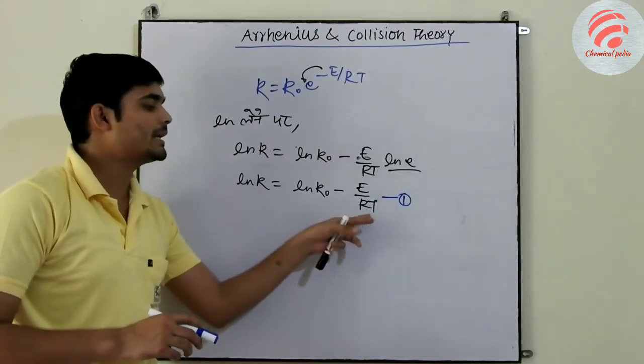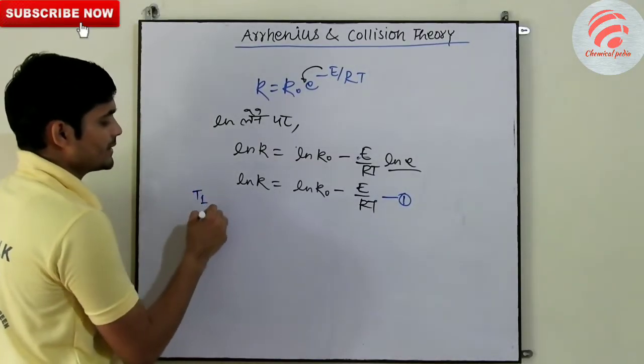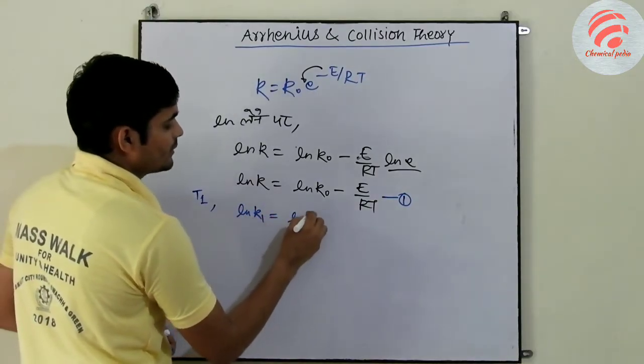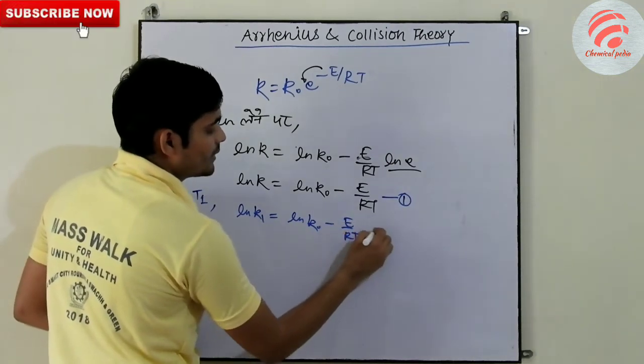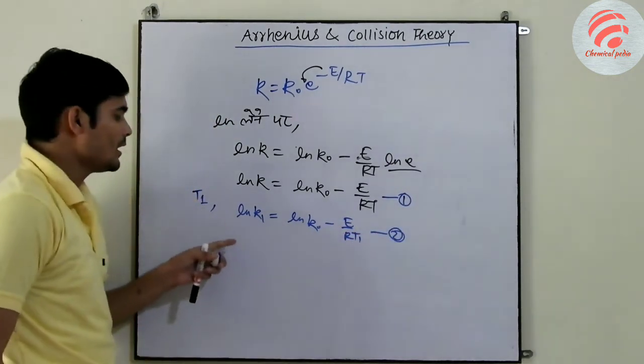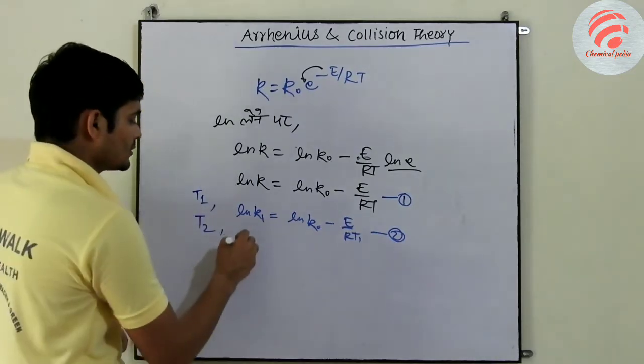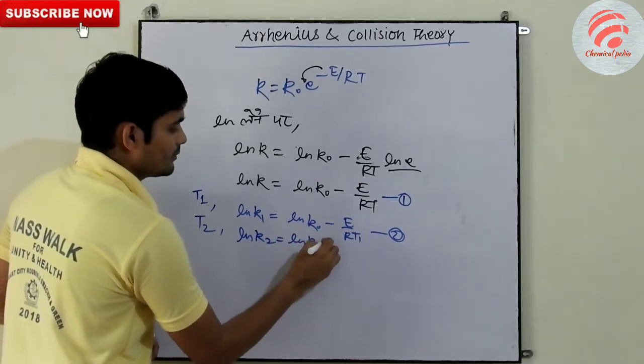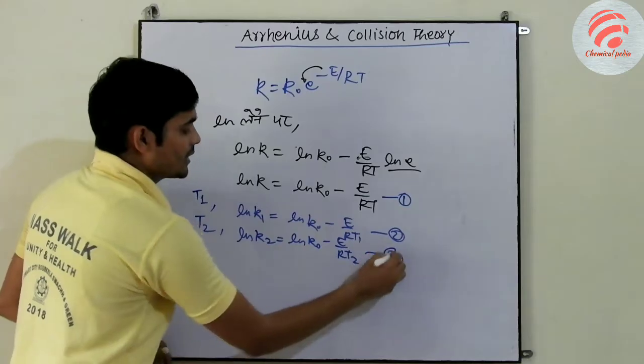Now, what do we do at constant T1? At constant T1 will be ln k1 equal to ln k naught minus E upon RT1. At T2, this will be ln k2 equal to ln k naught minus E upon RT2. Equation 3.